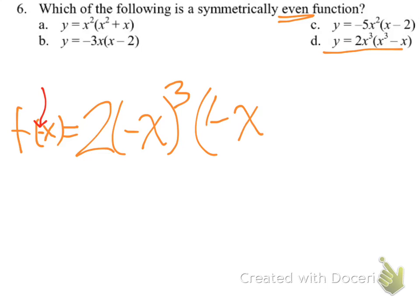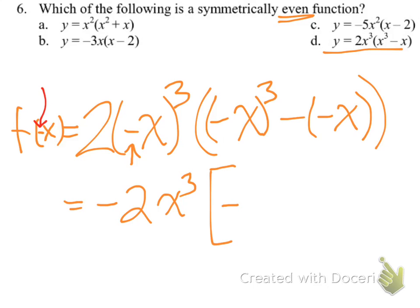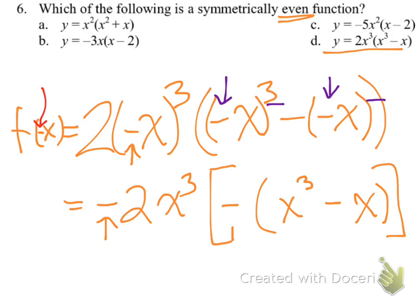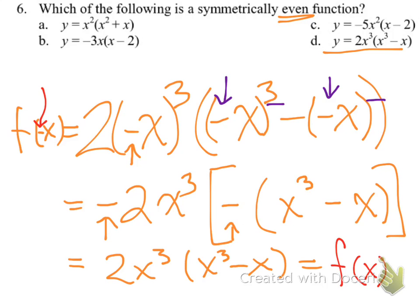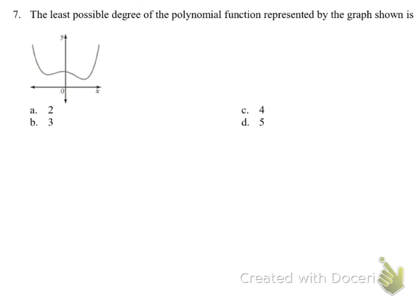After substituting negative x, we get this expression and we need to manipulate it to look like the original function. That negative sign in negative x cubed can come out front because negative x cubed is still negative. Then in the bracket, I can factor out this negative, and because of the odd exponents it remains negative. That leaves two negatives multiplying to make a positive, and we end up with exactly f(x) — which makes that function even.